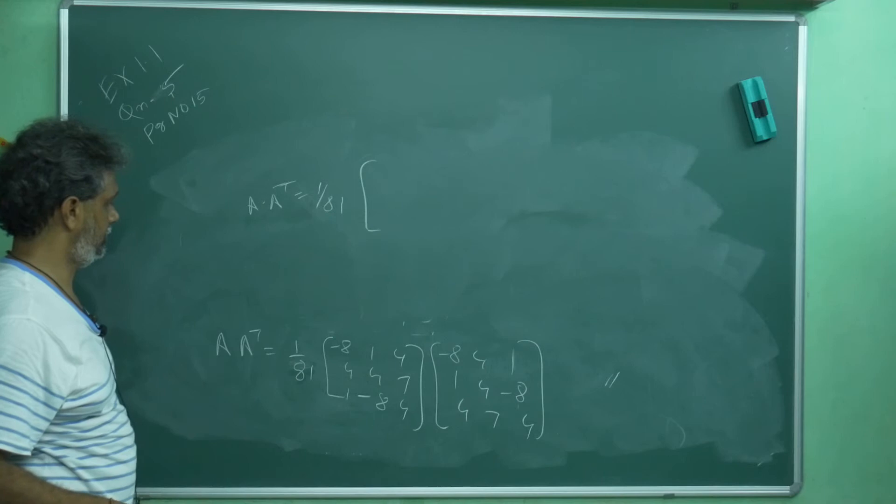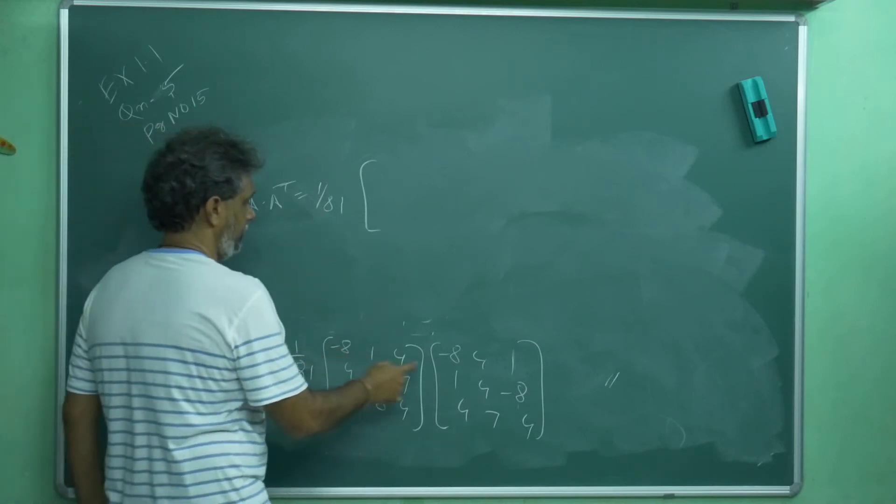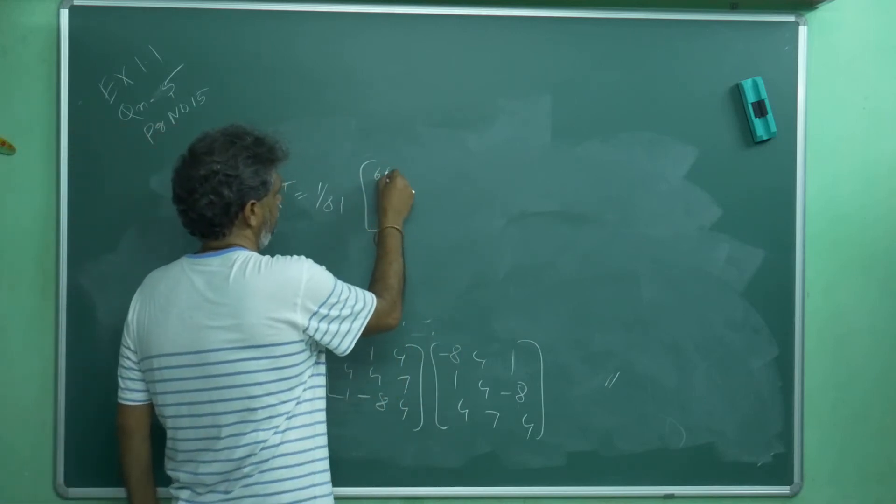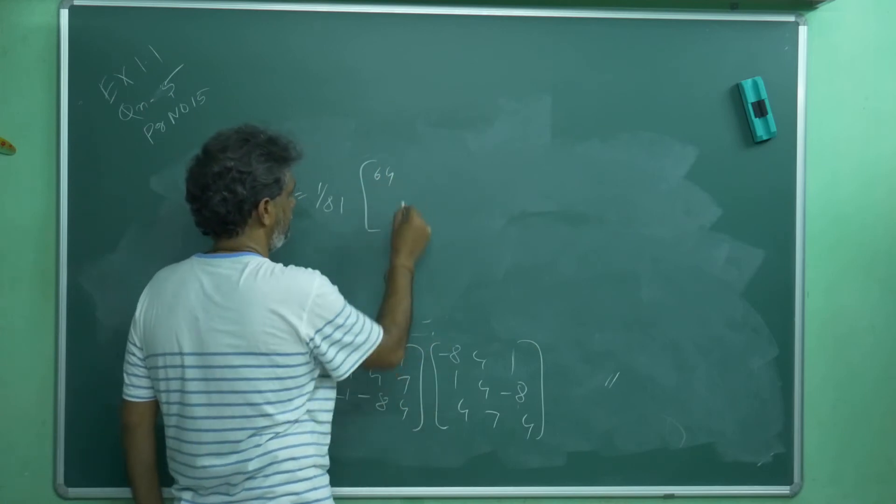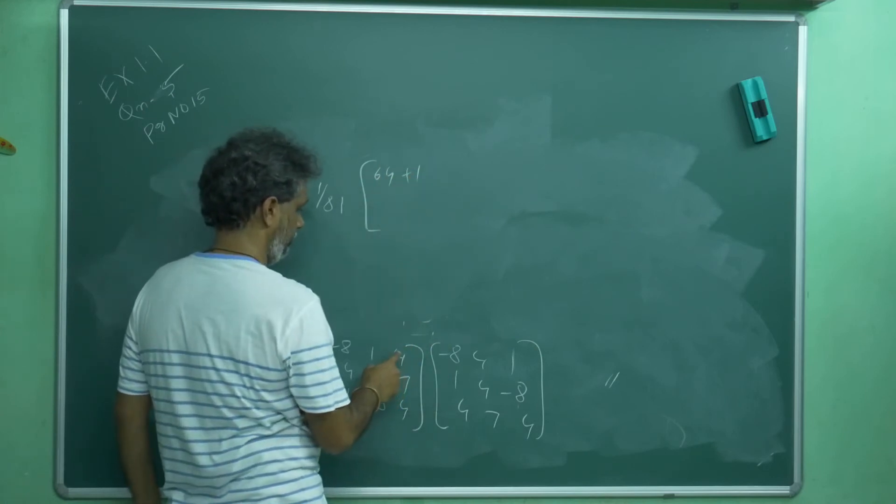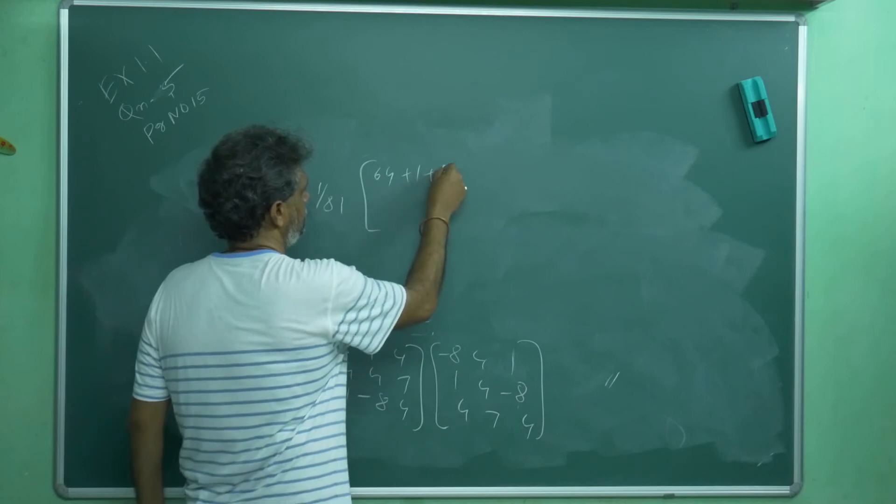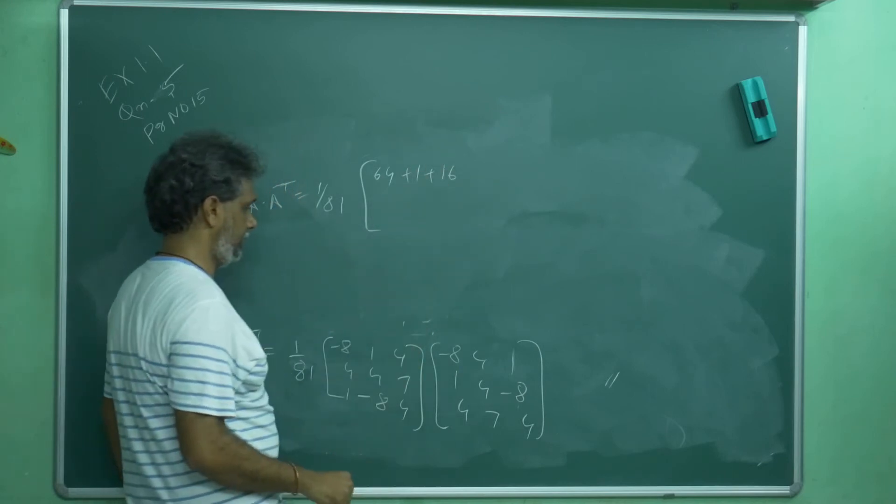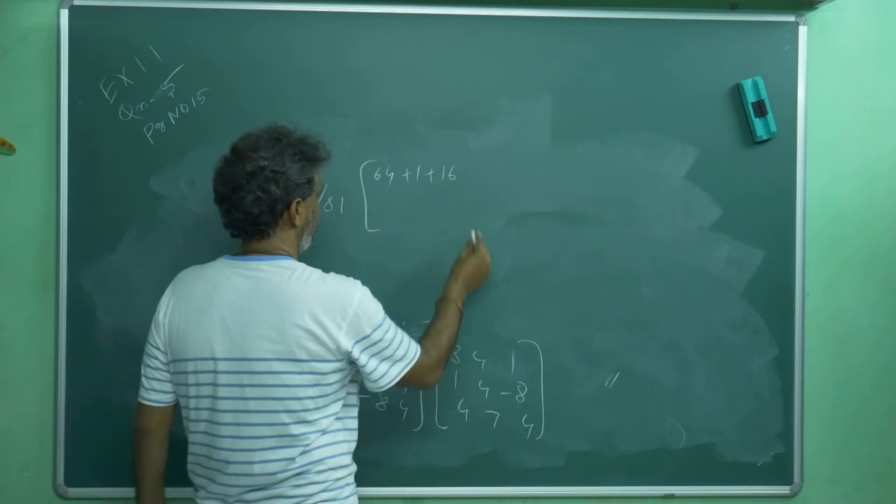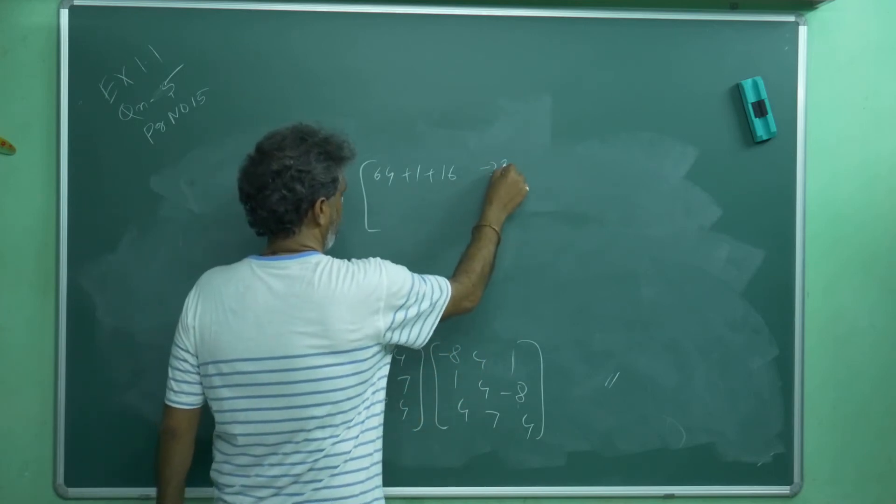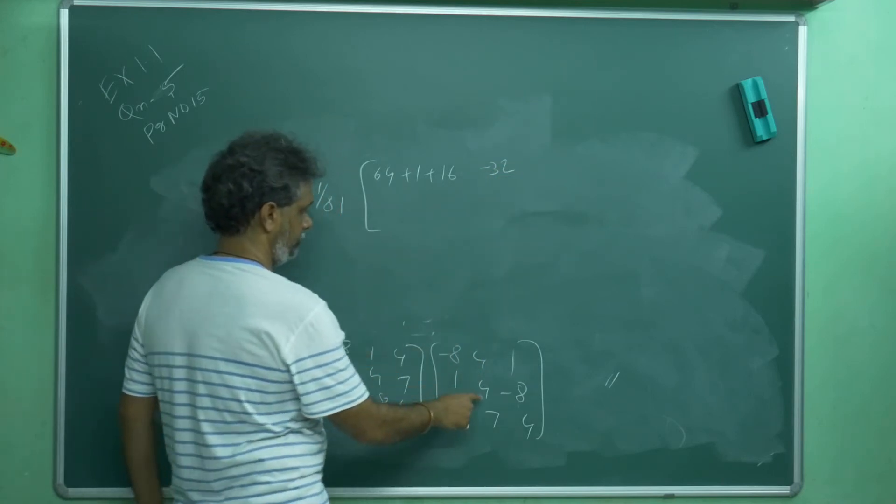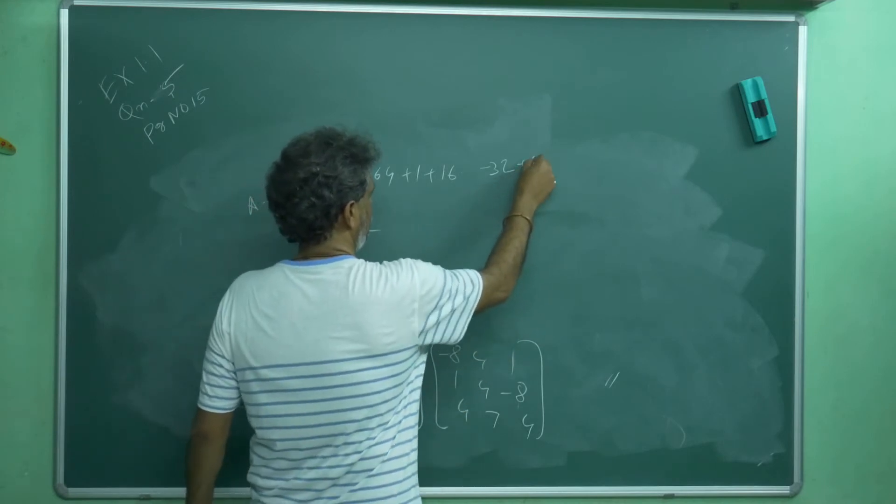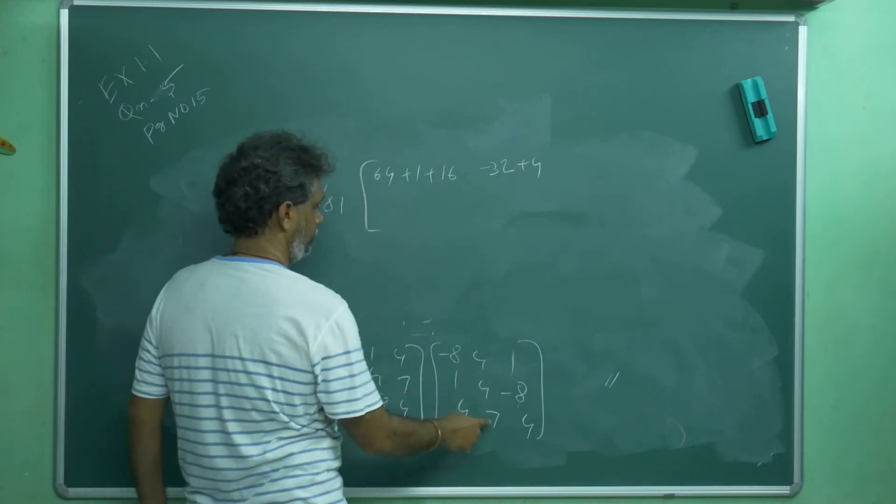Try to understand, my writing is very bad. Minus 8 into minus 8 is 64. 1 into 1 is 1. Plus 4 into 4 is 64. This is minus 8 into 4, minus 32. 1 into 4 is 4. Plus 4 into 7 is 28.